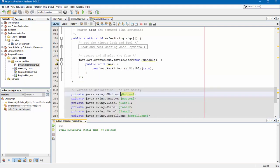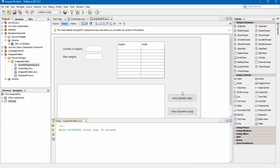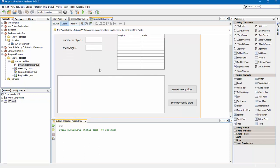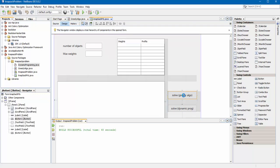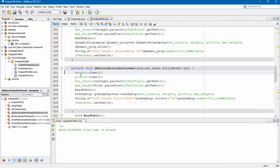I create a JFrame window. It contains a table. And the number of objects. And the maximum weights. So solve greedy algorithm. Double click.